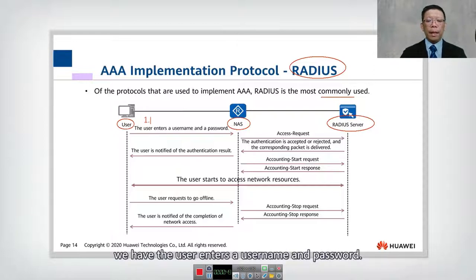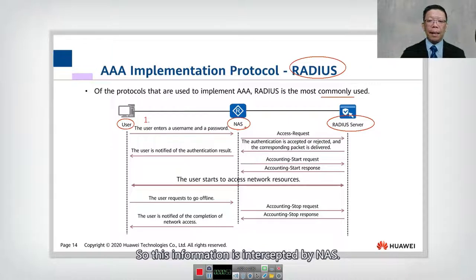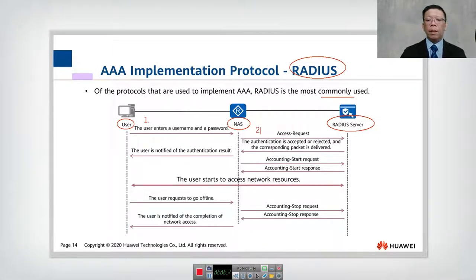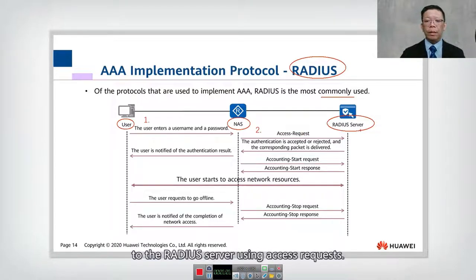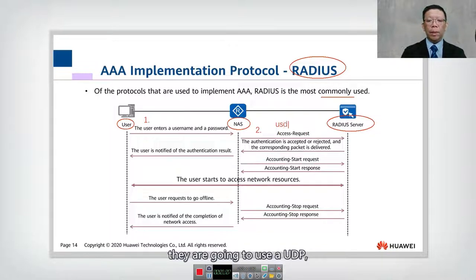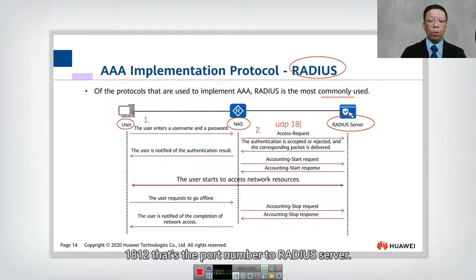This information is intercepted by the NAS, and on the second step the NAS sends this information to the RADIUS server using an Access Request. To do this, they use UDP — which is the transport protocol — on port 1812, sending to the RADIUS server.